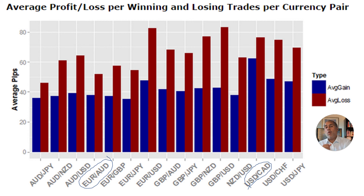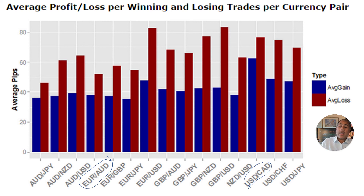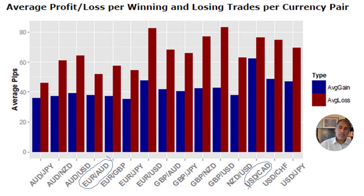Therefore, my theory is the trends tend to be longer and smoother, and therefore easier to ride than, say, cable — which is one of the most liquid pairs in the world, if not the most liquid — and therefore more likely to be volatile because different banks are having battles at different times on different outlooks on it.